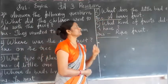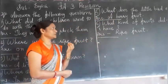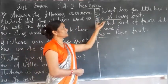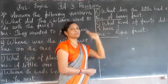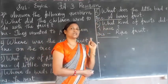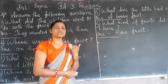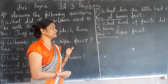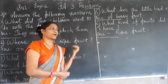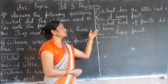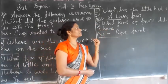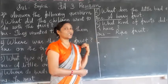Fifth one — what does the little bird eat? A little bird eats a berry fruit. Little bird ने कौन सा fruit खाया था? Berry fruit.